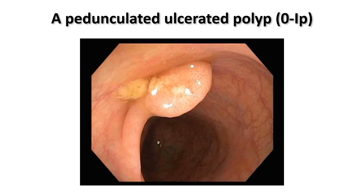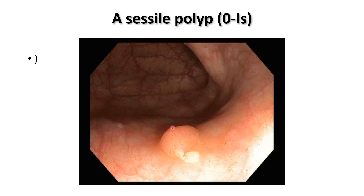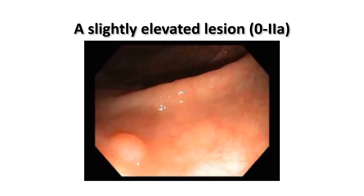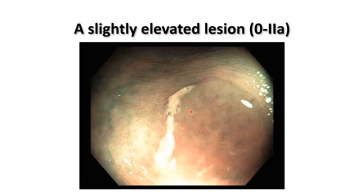Examples: a pedunculated lesion type 1P, a sessile lesion type 1S, and a slightly elevated lesion type 2A. When a lesion is more than 2 cm, it is called a lateral spreading tumor. According to the surface: if granular, it is called a lateral spreading granular tumor; if flat, a lateral spreading non-granular tumor. Granular surface type is safer than the flat non-granular type — the granular surface is a good sign.